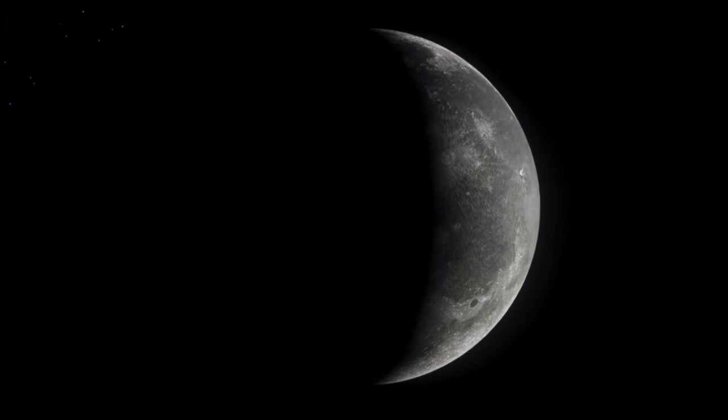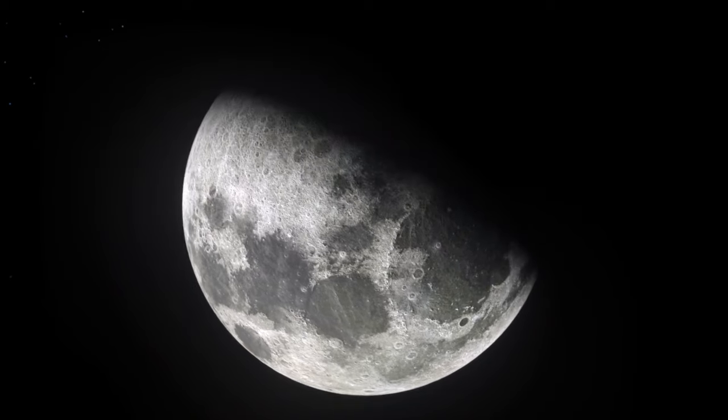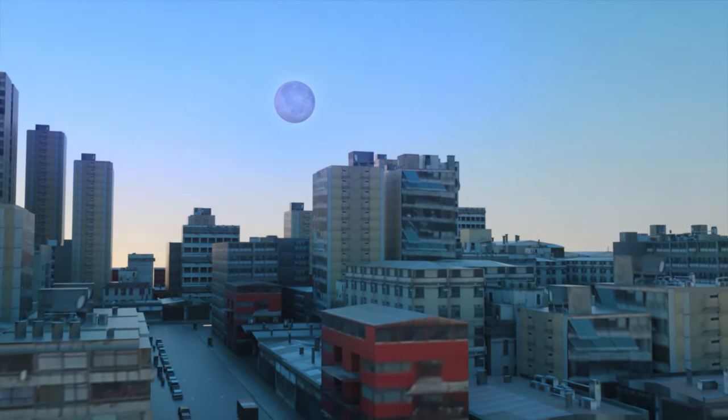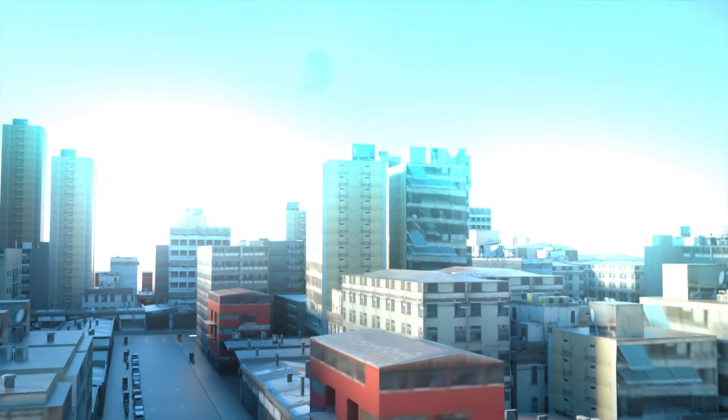The Moon has several phases. For example, new, full, or crescent Moon, first and last quarter. But whatever the satellite looks like, you can always find it in the night sky, and sometimes even during the day.